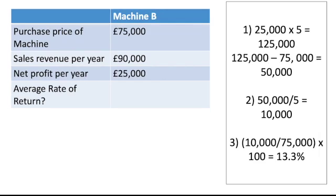Machine B gained $25,000. Times by five: $125,000. The purchase price of the machine is different — $75,000. So we've got $50,000 divided by five: $10,000. Then $10,000 divided by $75,000 times by 100 and we get 13.3%. So which one do we pick? We pick machine B because it's the highest one.